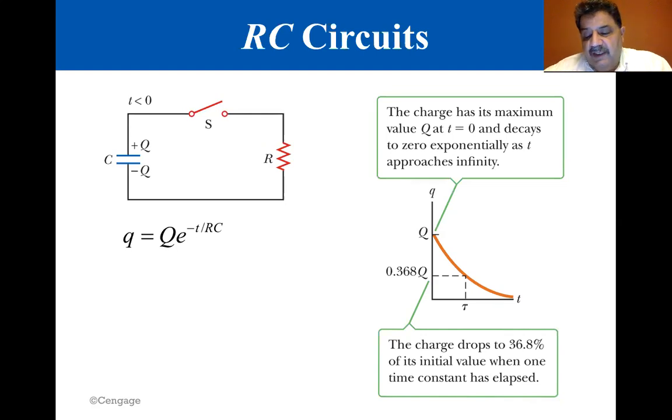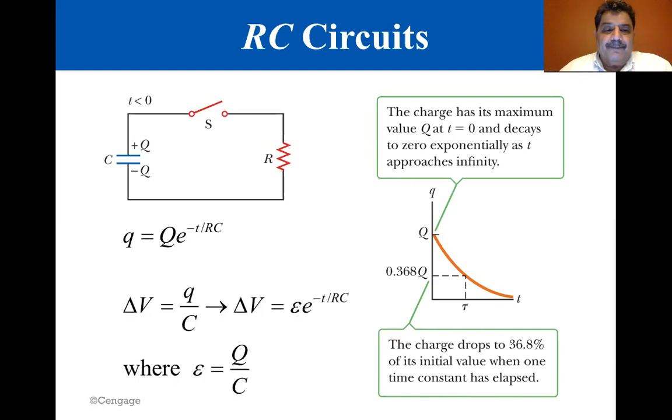Because delta v equals q divided by c, the voltage across the capacitor also decreases exponentially with time according to the equation shown here. Delta v equals epsilon times e to the minus t over RC where epsilon equals Q over C. That epsilon is the initial voltage across the fully charged capacitor.